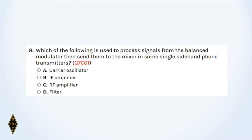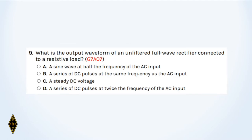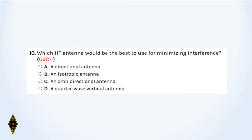Question nine: What is the output waveform of an unfiltered full wave rectifier connected to a resistive load? And number ten: Which HF antenna would be the best to use for minimizing interference?